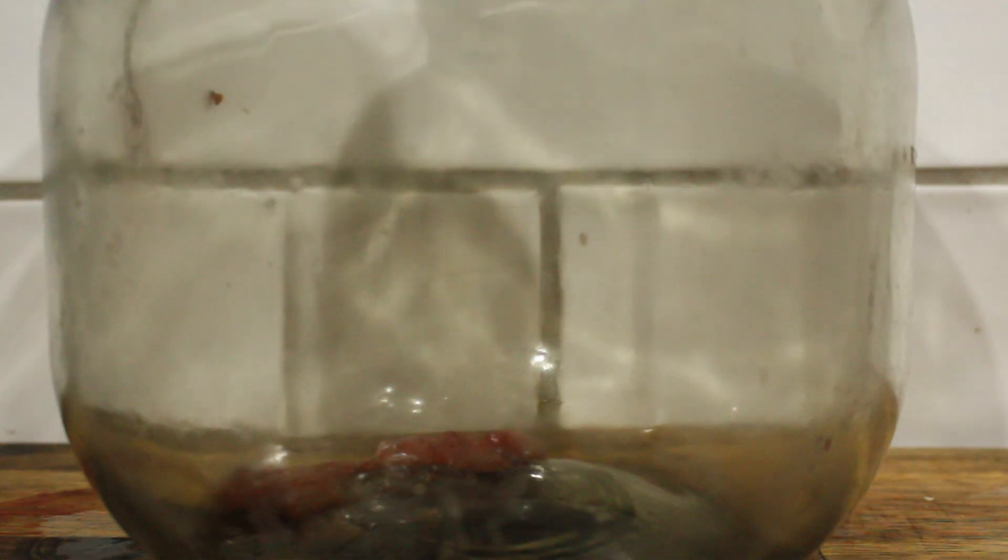You'll also want roughly twice the weight in water as you have fruit. In this case if we use 500 grams of plums it would be 1 kilogram or 1 liter of water. If we're making this in a demijohn it would be about 4 liters of water. If we're going to make this in a standard fermenter it's about 20 liters of water.